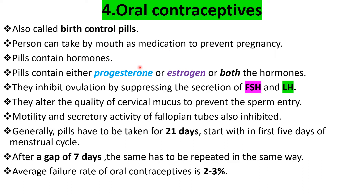Pills contain certain hormones. Some pills contain only Progesterone, some contain only Estrogen, and some contain both Progesterone and Estrogen. We have already discussed the role of Progesterone and Estrogen in the human female reproductive system. Their main function involves development of follicles in the ovary and releasing of the secondary ovum from the Graafian follicle.